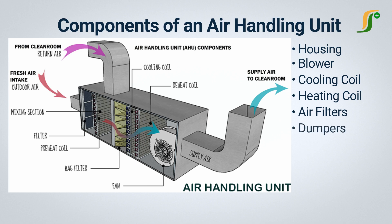Dampers are barriers between the air supply and are used to control the airflow in the air handling unit. They are used to regulate the supply air and return ducts in air handling units. Ducts are insulated metal piping from the AHU to the manufacturing area. Two different ducts are used for air supply and return. Insulation minimizes the effect of the environment on the supply and return of air, helping to minimize energy loss. The condensate drain collects water droplets from the coils in a drain pan, and a drain line carries the water from the drain pan to outside the housing.